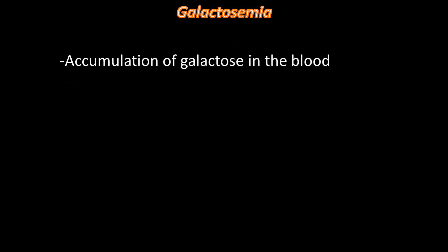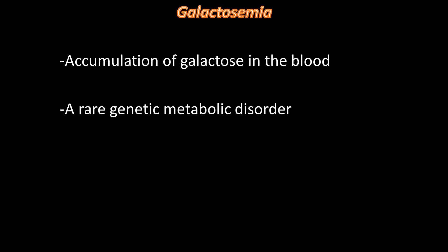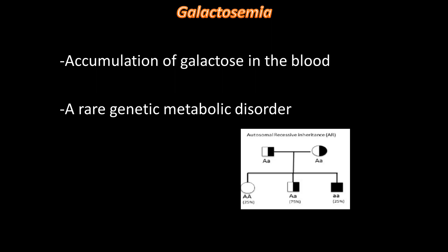Galactosemia means accumulation of galactose in the blood, and it is a rare genetic metabolic disorder. It is rare because it occurs in approximately one in every 60,000 live births. It is genetic because it follows an autosomal recessive mode of inheritance. As shown here, if both parents are carriers but unaffected, there will be a 25% chance that their child will have galactosemia.